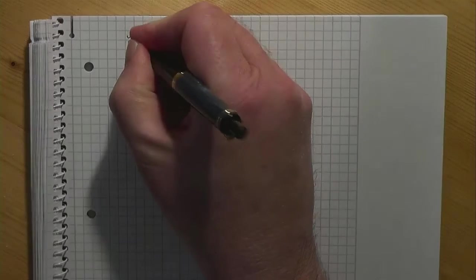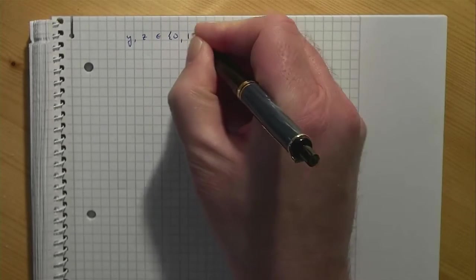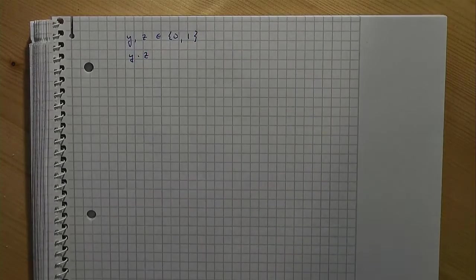Let's start with two binary variables y and z. Assume that we face a model where we need to compute a product, that is y times z. The question is if there is an approach to formulate this linearly.